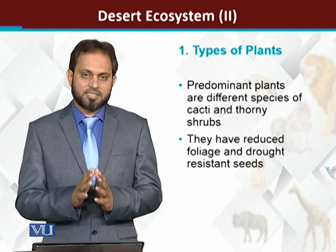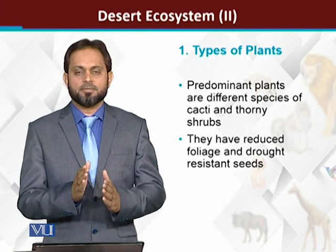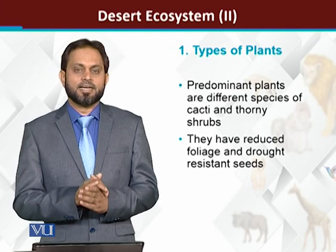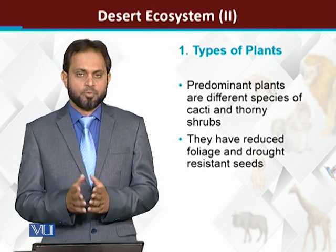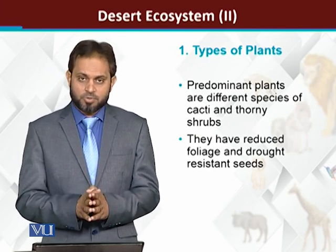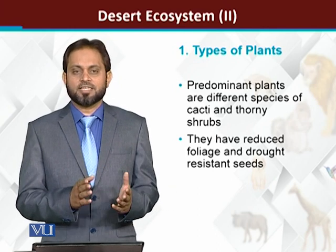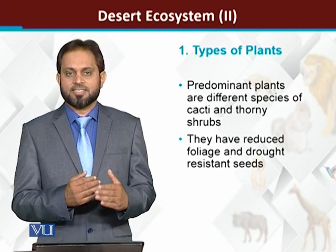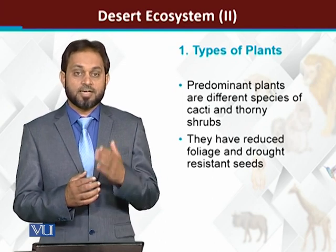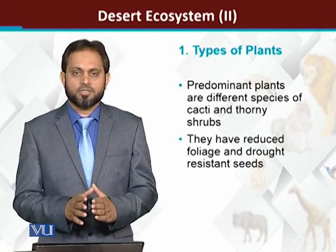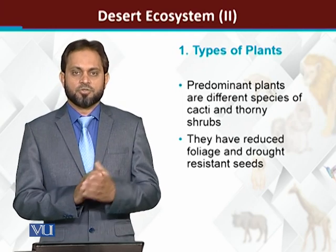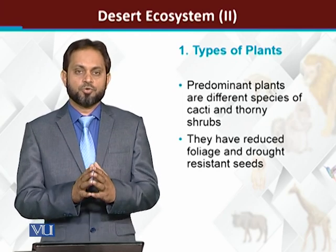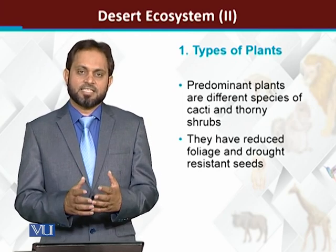When we talk about desert plants, deserts can be low precipitation. Deserts can be warm and cool — cold deserts can also be found. But the common thing is the precipitation level. If we look at rain or snowfall, if it is less than twenty-five centimeters, we can call it a desert. This means there is an acute shortage of water, and only those plants which can survive acute water shortage will be present.